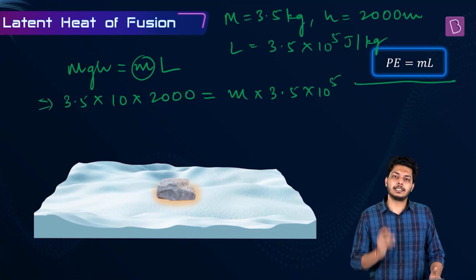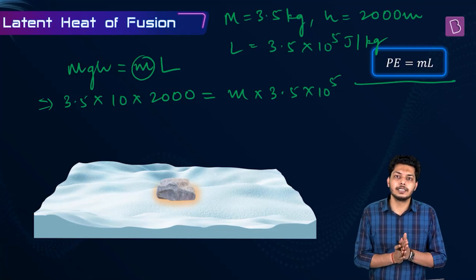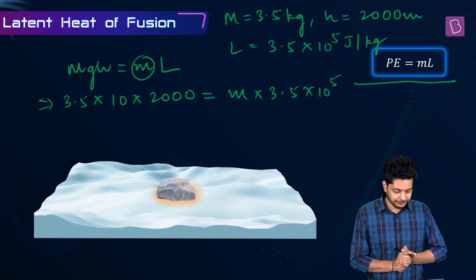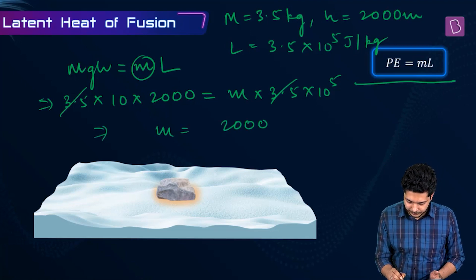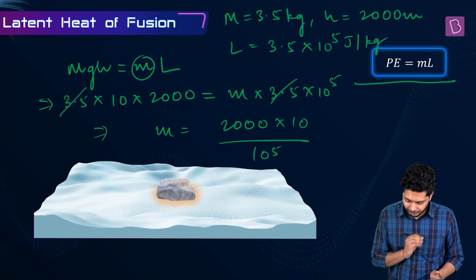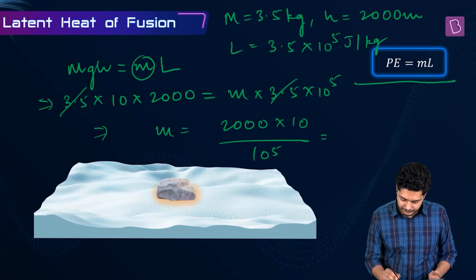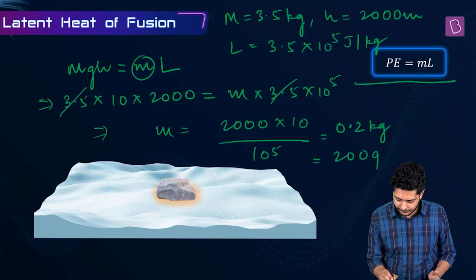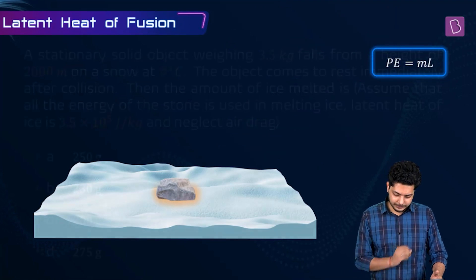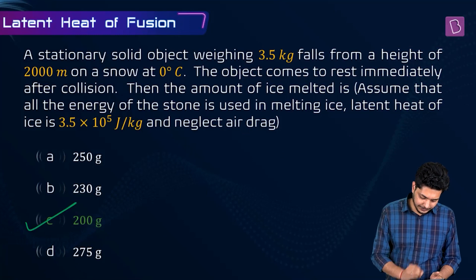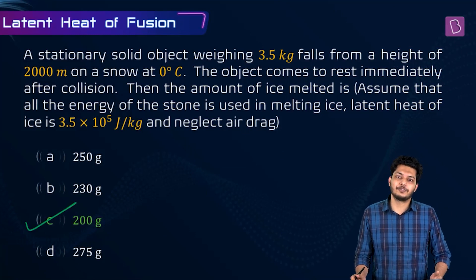Potential energy gets converted to heat energy, which converts ice to water. The 3.5 cancels, so M equals 2000 × 10 divided by 10⁵, which reduces to 0.2 kg or 200 grams. Option C — 200 grams — is the correct answer.